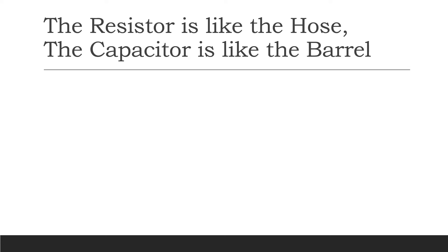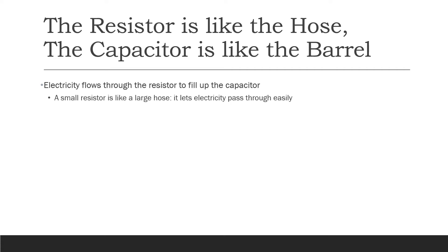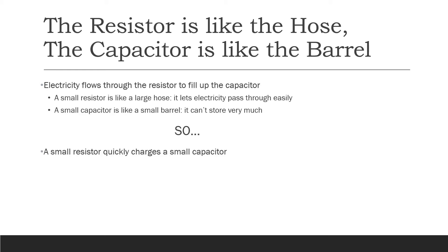In an RC circuit, the resistor is like the hose and the capacitor is like the barrel. The electricity flows through the resistor to fill up the capacitor. A small resistor is like a large hose — it lets electricity pass through easily. And a small capacitor is like a small barrel — it can't store very much. So a small resistor quickly charges up a small capacitor, but a large resistor slowly charges up a large capacitor.